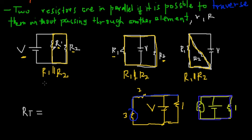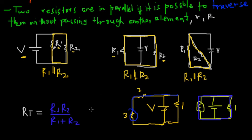Once R1 and R2 are identified as parallel, the formula for total resistance in parallel is: (R1 × R2) / (R1 + R2). This is how you identify and calculate resistance in parallel. In the next video, we'll be talking about finding effective total resistance in series and in parallel.